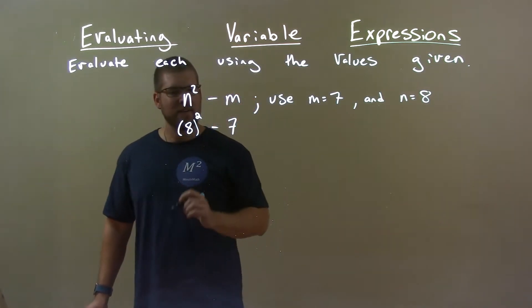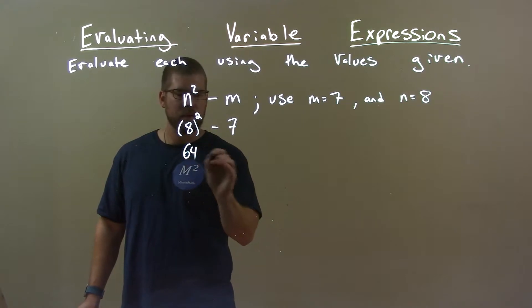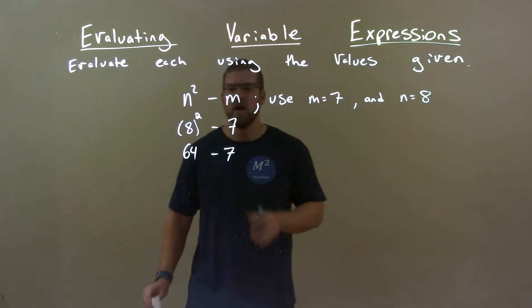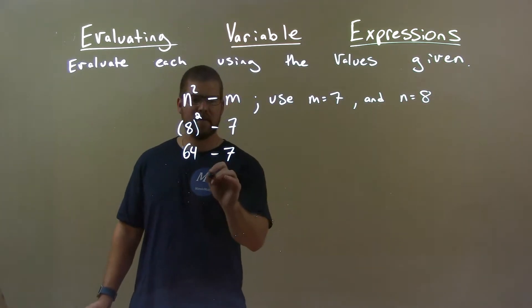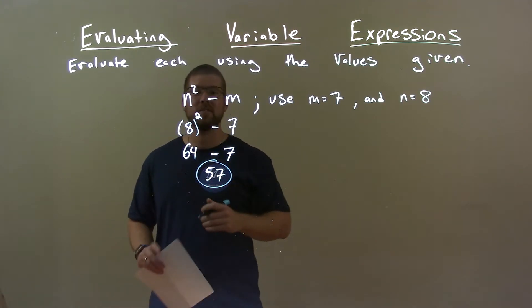So let's go. 8 squared is 64, subtract 7. Okay, what's 64 minus 7? Right, 64 minus 7 is 57. And so our final answer here is just 57.